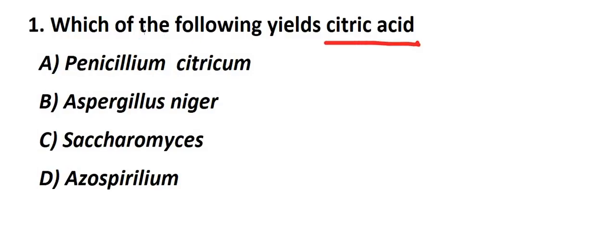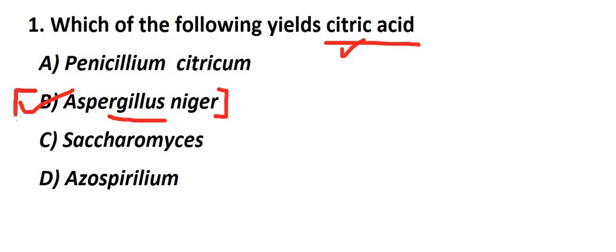Next question: which of the following produces citric acid? Aspergillus niger is a fungi that secretes citric acid. This is the right answer.